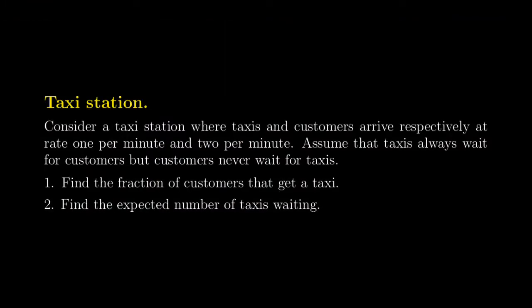More precisely, we assume that the problem takes place at a taxi station. We assume that taxis and customers arrive respectively at rate one per minute for the taxis and two per minute for the customers. We also have the assumption that taxis always wait for customers, but customers will never wait for taxis. The goal is to find the fraction of potential customers that get a taxi, and also the expected number of taxis waiting at the taxi station at equilibrium.